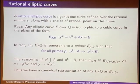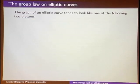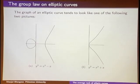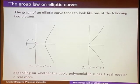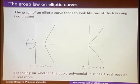That's how we'll think of the set of all rational elliptic curves. If you graph the elliptic curve y² = x³ + ax + b over the real numbers, it tends to look like one of two pictures. Either it has two components — when the cubic x³ + ax + b has three real roots — or it has one component when there's only one real root.